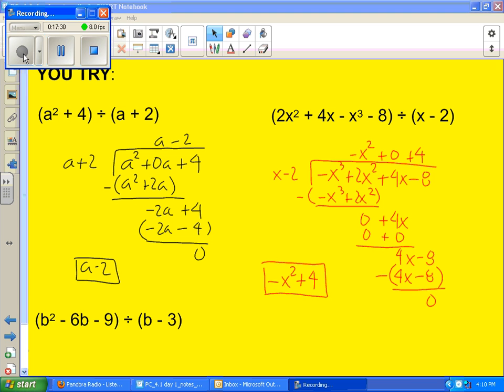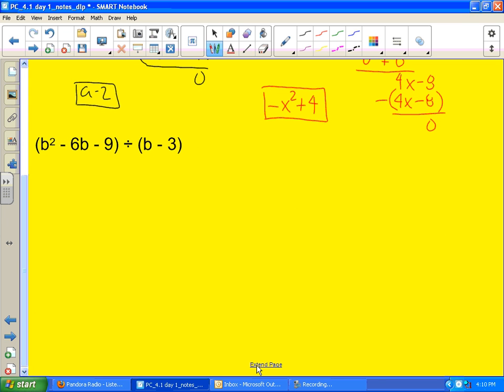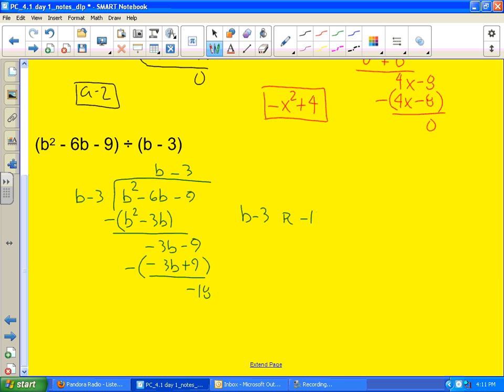So we have b² - 6b - 9 being divided by b - 3. b needs to become b² by multiplying by b. b² - 3b, subtracting those, and we get -3b - 9. -3 becomes -3b + 9. And now we're subtracting those and I get -18 as a remainder. So my answer for this one would be b - 3 with a remainder of -18.